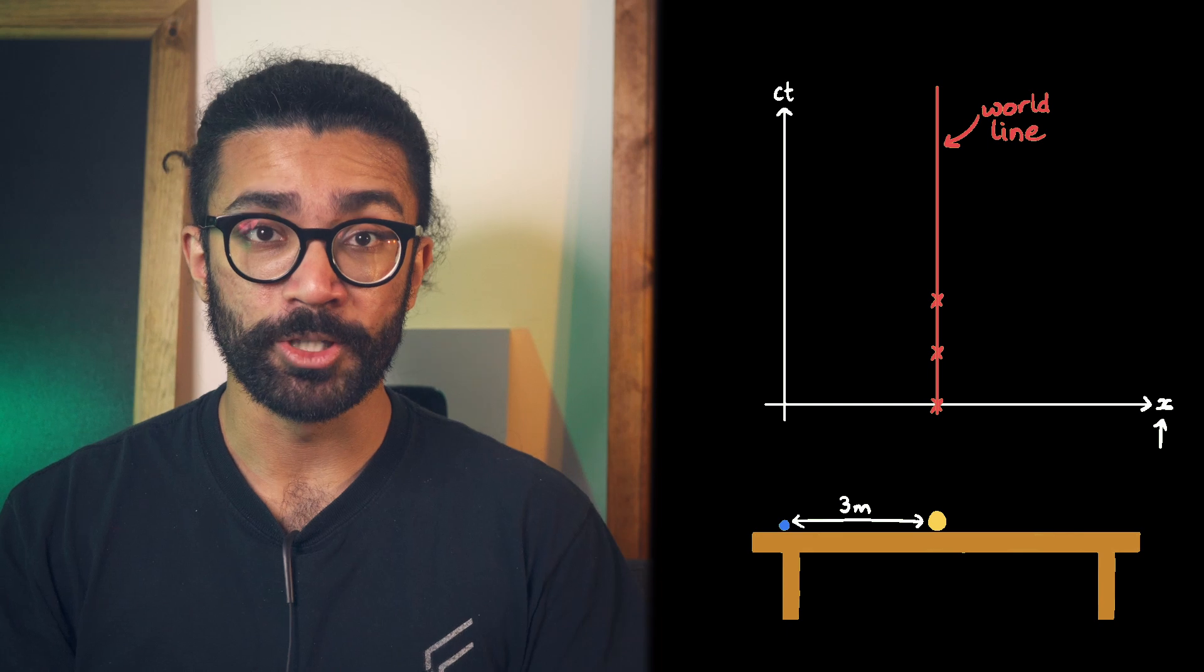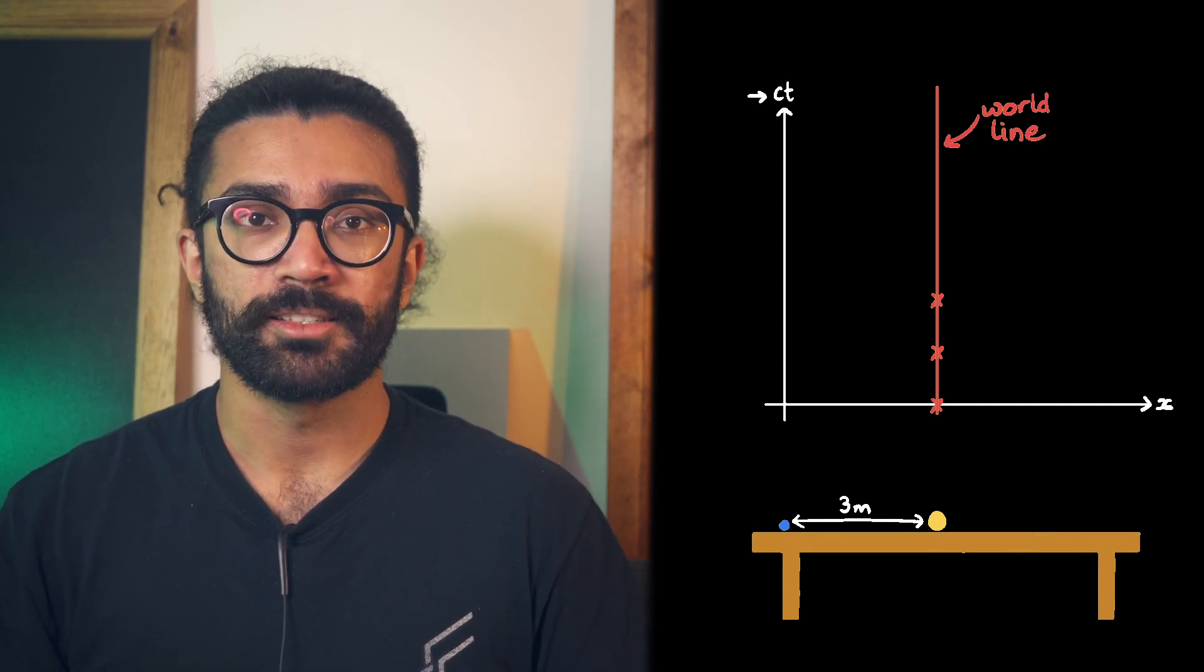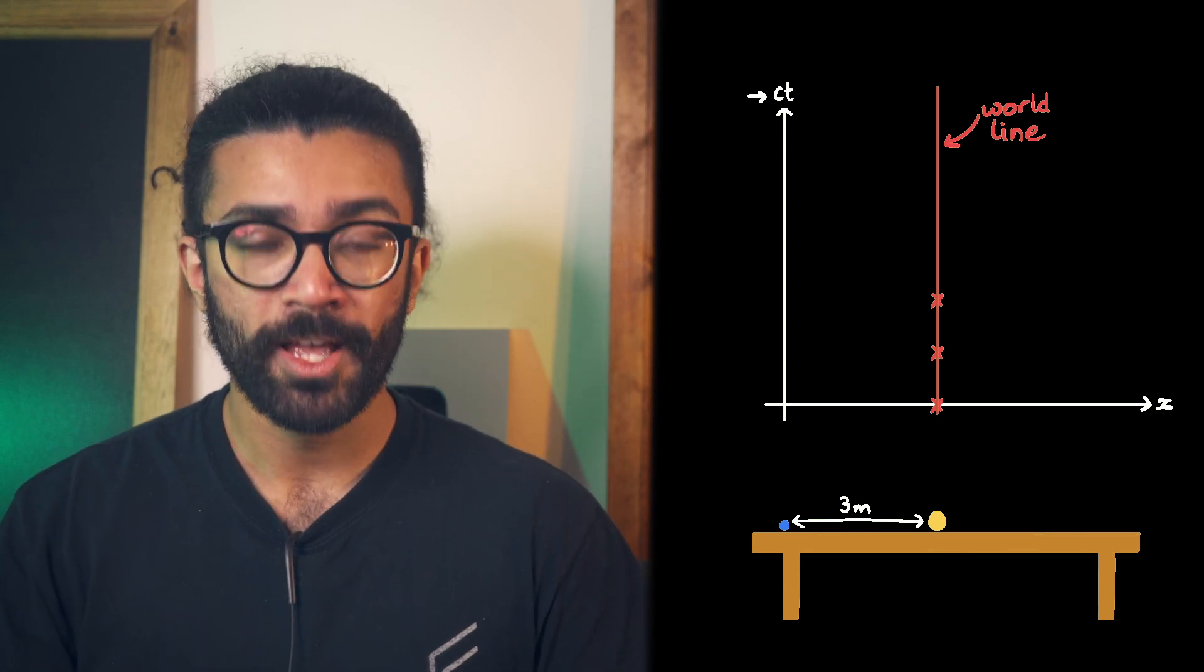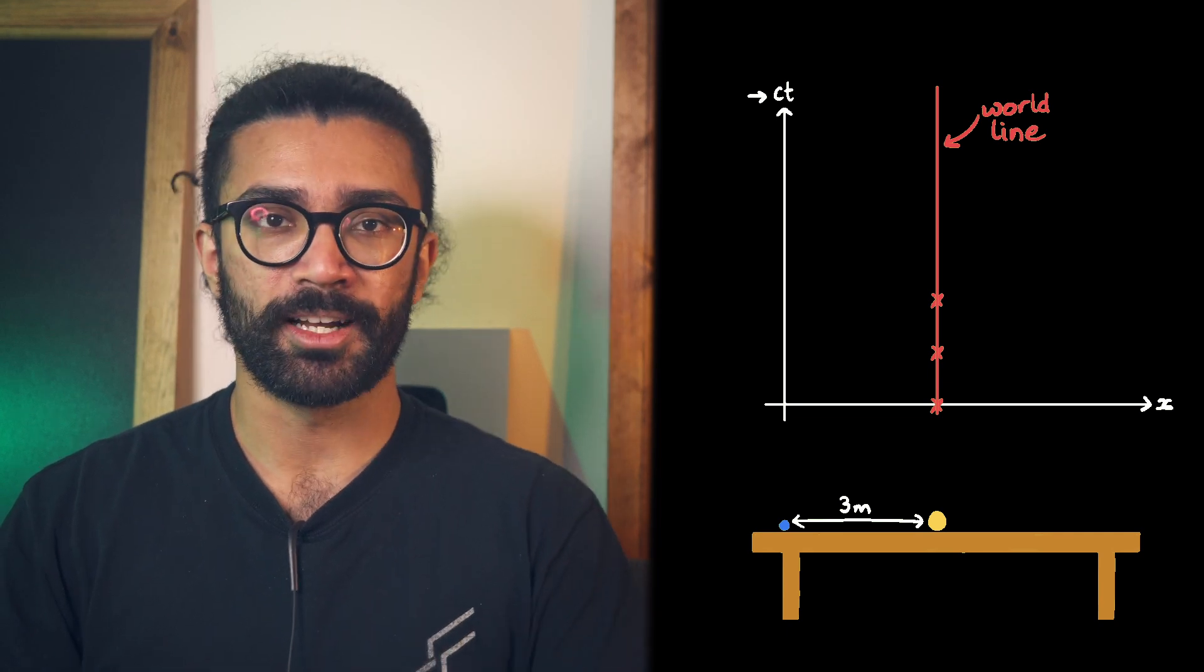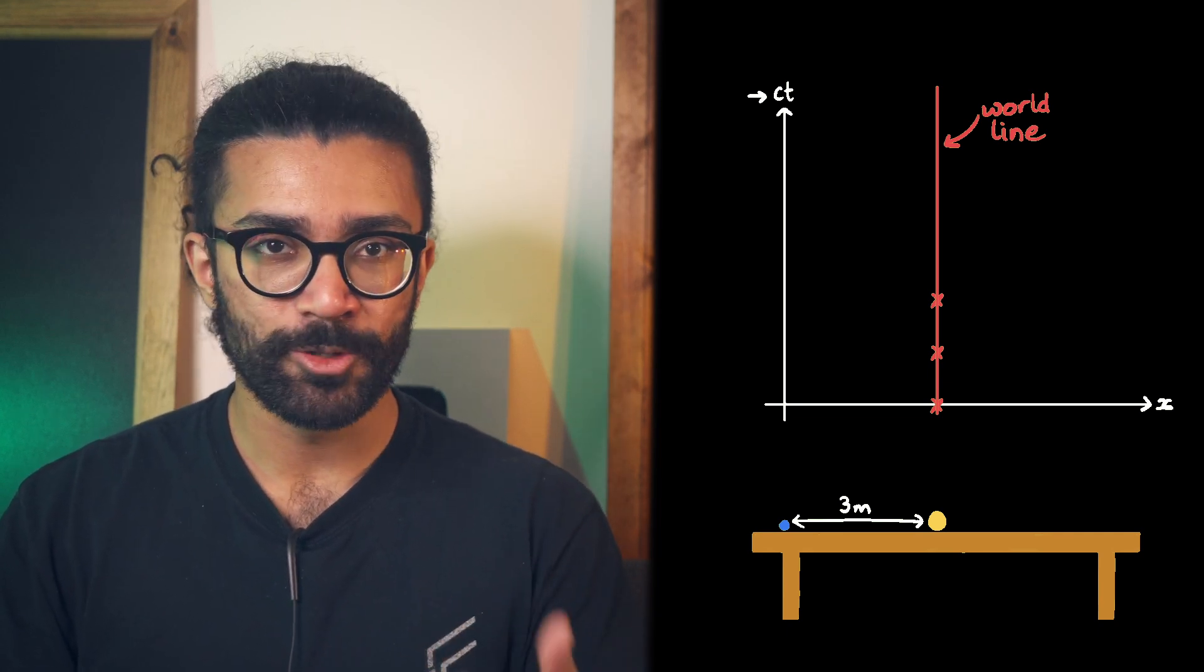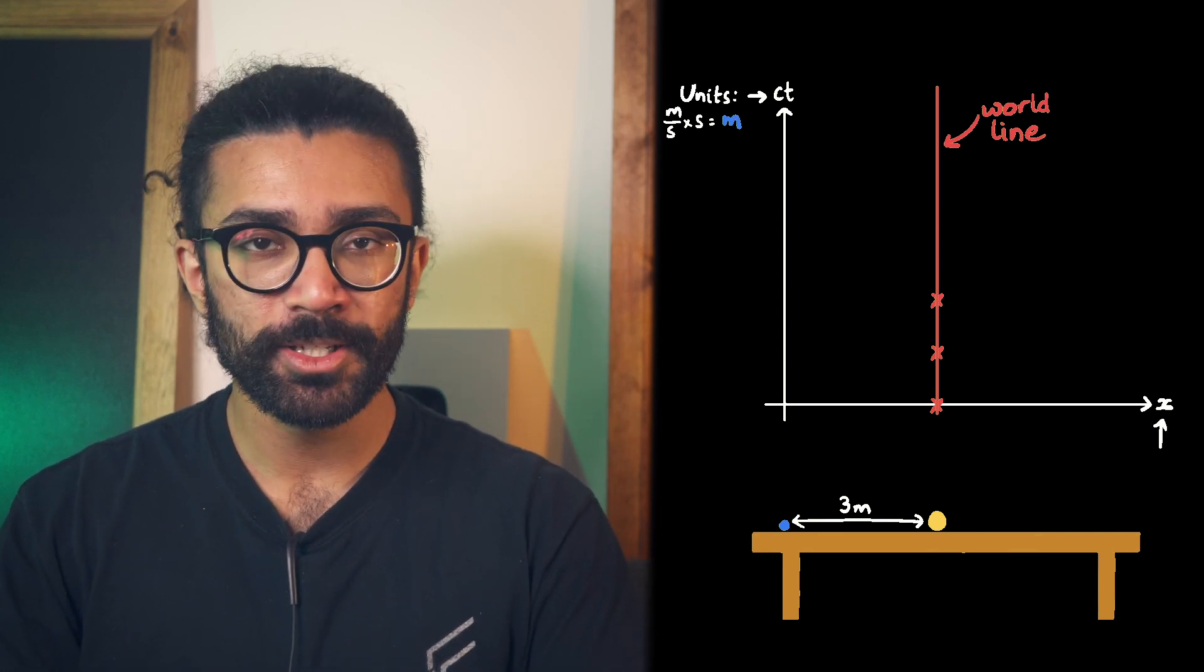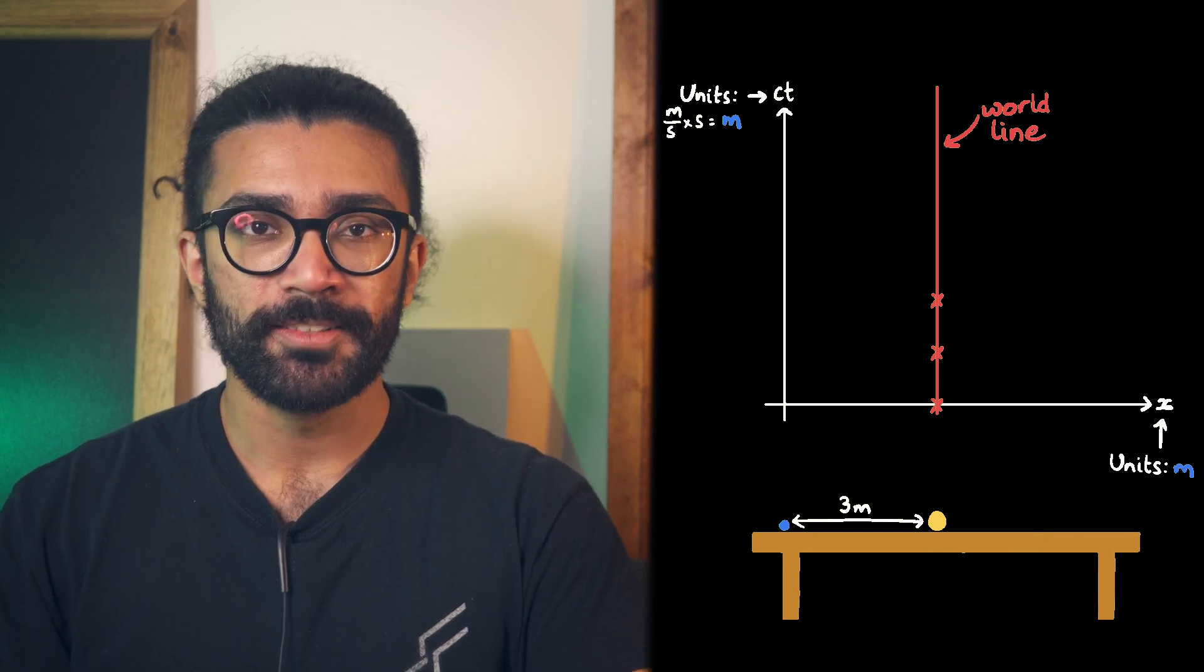which is what we may be more used to. The other axis is also basically just a time axis, but with this scaling factor c, the speed of light. This way, we don't actually end up plotting time values on this diagram, but rather time values multiplied by the speed of light. Thus, the values that we plot have the same units as the displacement on this axis.